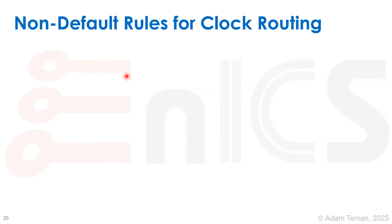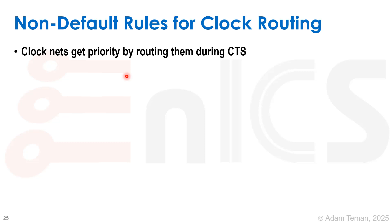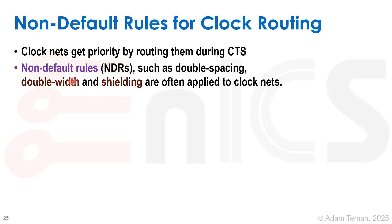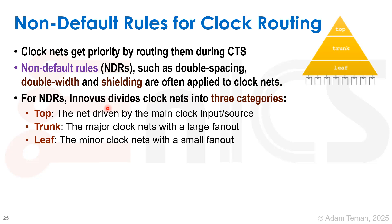The final topic for CTS is non-default rules for clock routing. Clock nets get priority by being routed during CTS — before signal nets, when only the power grid exists in the floor plan. Not only are they routed first, we also want to route them with NDRs (non-default rules) such as double spacing, double width, and shielding. Innovus defines three categories of clock nets: top (the net driven by the main clock source with very large fanout), trunk (major clock nets with large fanout), and leaf (minor clock nets with small fanout that connect to the actual registers).